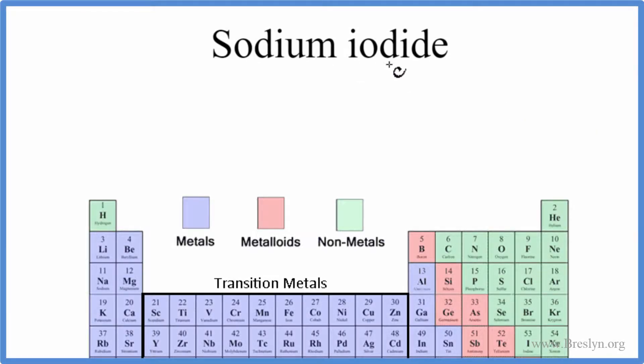To write the formula for sodium iodide, we'll go to the periodic table. We can see that sodium, that's Na, and then iodide, that's iodine, that's I.